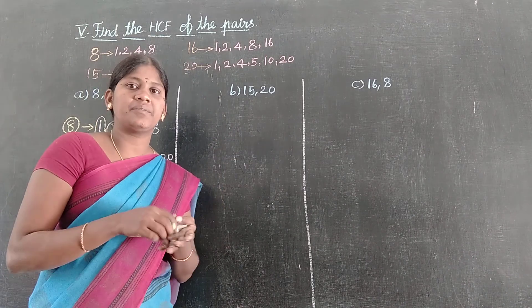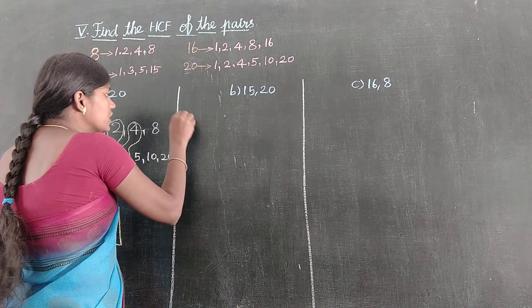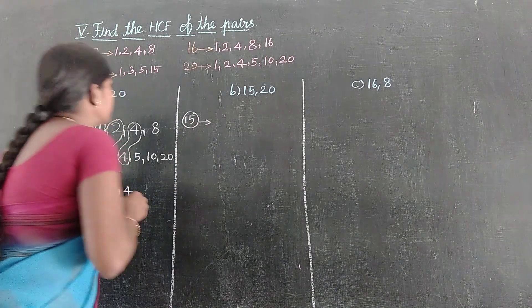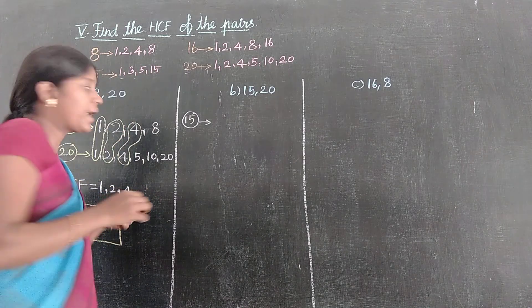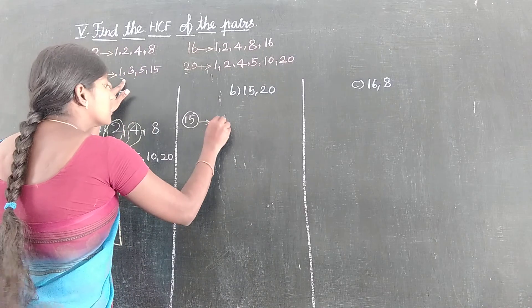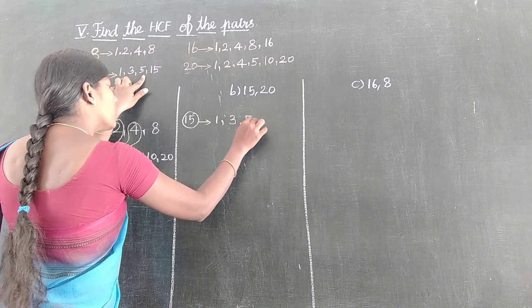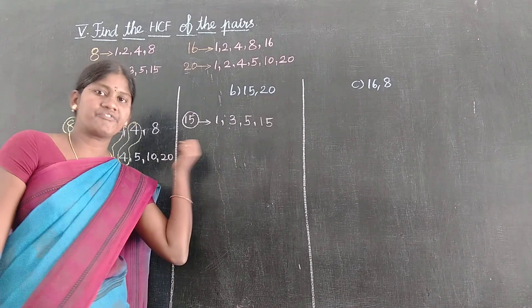Next pair: 15 and 20. So first number, 15 corner factors. 15 corner factors: 1, 3, 5, 15. 1, 3, 5 and 15. This is factors of 15.